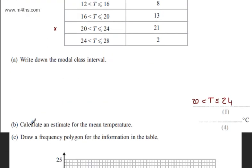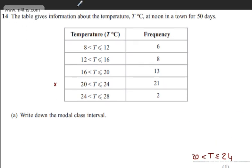In part B for four marks, we need to calculate an estimate for the mean temperature. So this is grouped data, and what I'm going to do is create two more tables on my table. I'm going to have the midpoint and then the frequency times by the midpoint. So let's go ahead and do that.